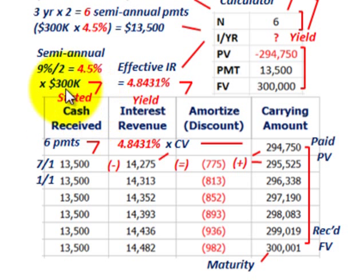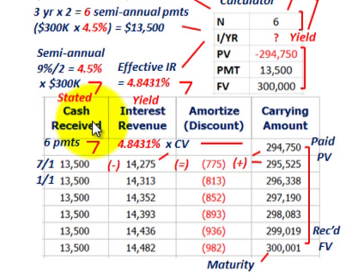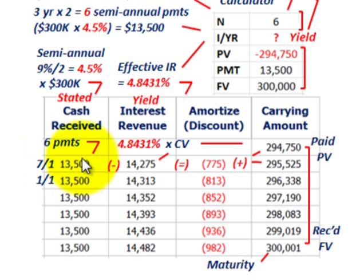First, let's look at cash receipts. We were given that these are 9% bonds paying semi-annually, so the semi-annual interest rate is 4.5%. We have $300,000 worth of bonds outstanding, so 4.5% times $300,000 gives us a semi-annual cash receipt of $13,500.